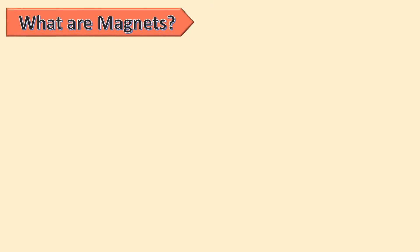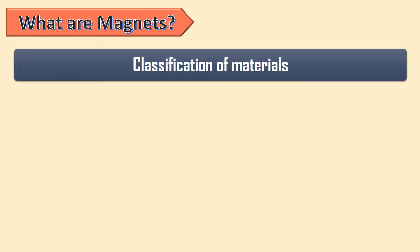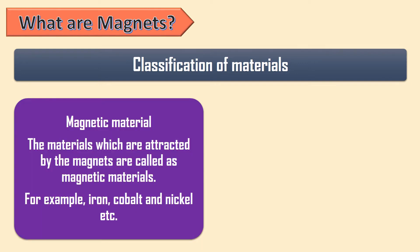From the definition of magnets, we categorize materials into two groups: magnetic materials and non-magnetic materials. Magnetic materials are those materials which are attracted by magnets. For example, iron, cobalt and nickel.